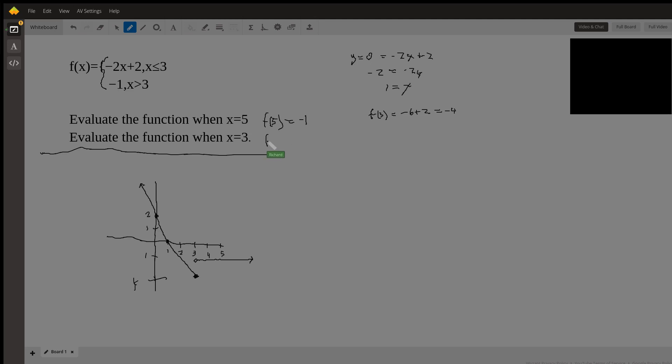And then f of 3. F of 3, this is going to be negative 4 because of that closed dot. Again, if you're coming in here and your value is 3 for x, you're going to stay on this top line because this is when x is equal to 3 as well as less than 3. So you plug in 3 here and you get negative 6 plus 2 which would give you negative 4.